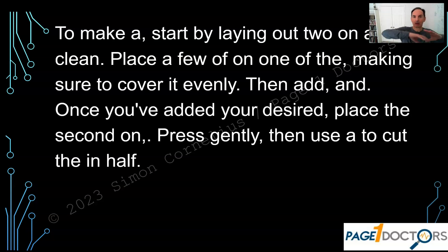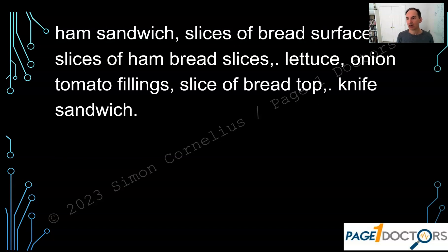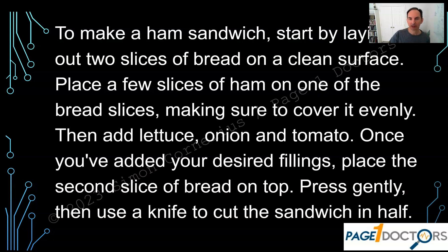The reason why is I've taken out all of the nouns in this particular piece of text. So you have the adjectives, the verbs, the pronouns, and all other parts of speech — except for the nouns. Now, how about if I just give you the nouns? No other parts of speech, just the nouns: ham sandwich, slices of bread, surface, slices of ham. By now you probably realize this piece of text is all about making a ham sandwich — and you would be correct. This is the full text.